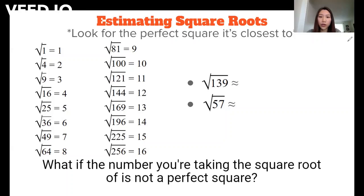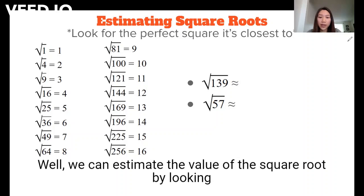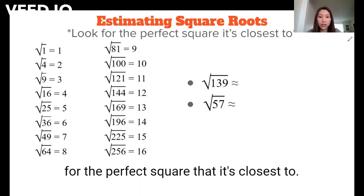What if the number you're taking the square root of is not a perfect square? Well, we can estimate the value of the square root by looking for the perfect square that it's closest to.